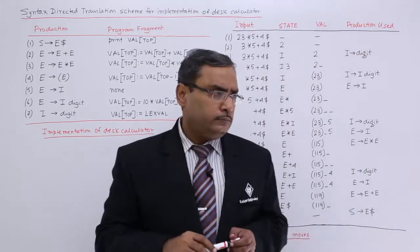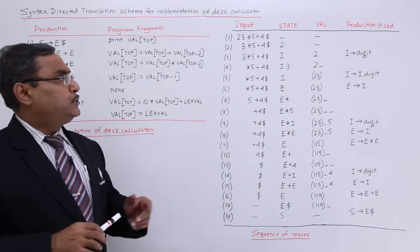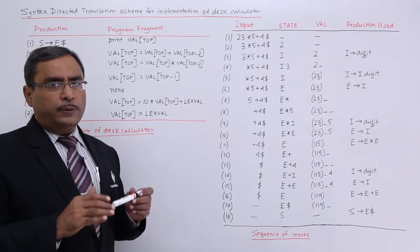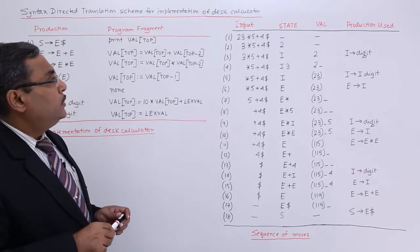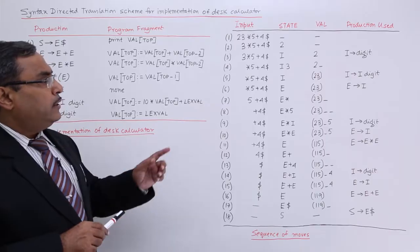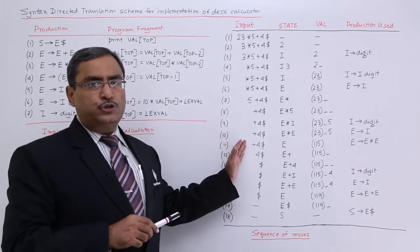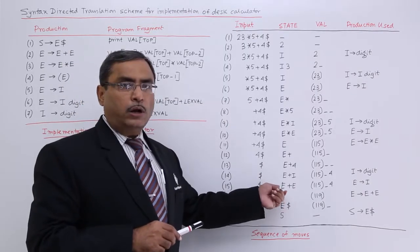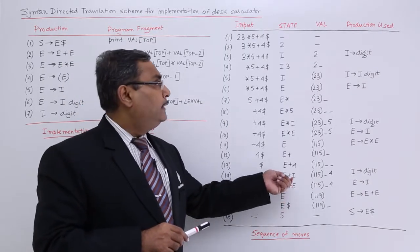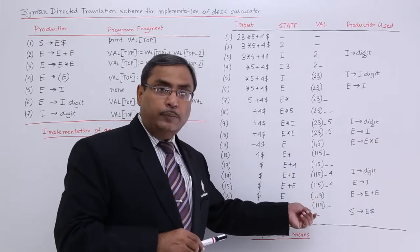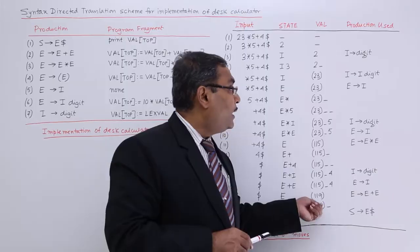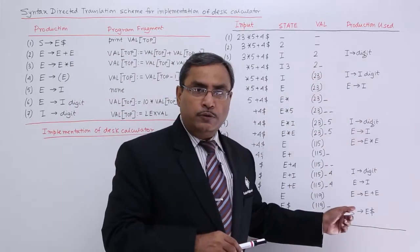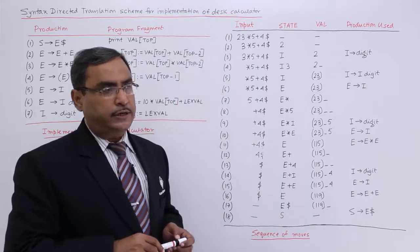Let me execute this. We have intentionally kept the same expression as in our previous video: 23 star 5 plus 4 dollar. We have 4 columns: one is the unmatched input string, next is the state obtained so far, then the content of the stack — where we can put only values — and the fourth column mentions the respective production used for evaluation.